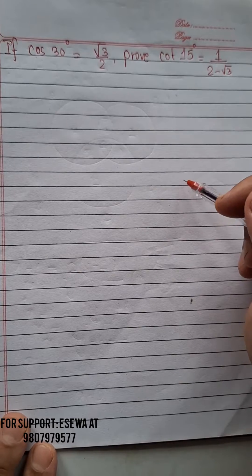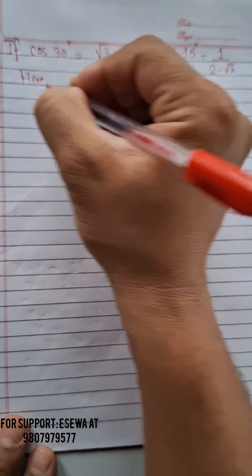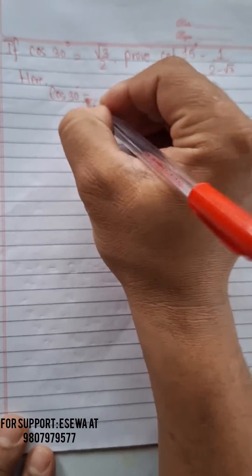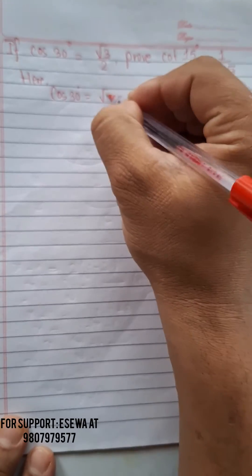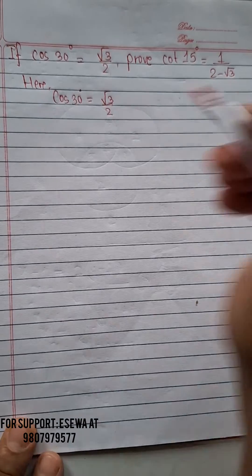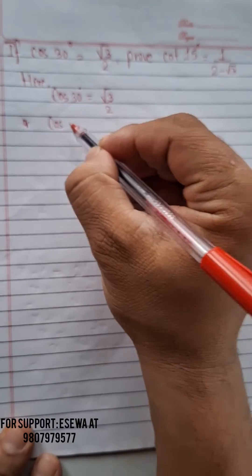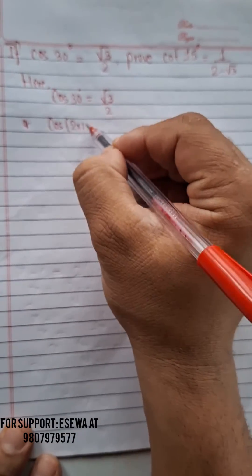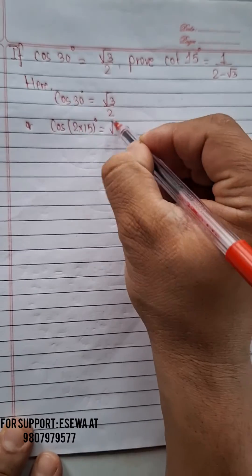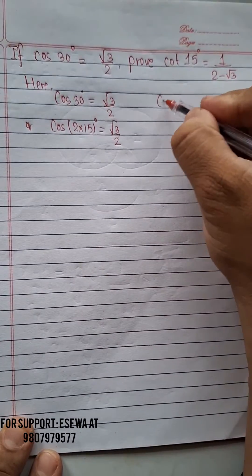We have been given that cos 30° = √3/2. What we can do here is simplify this 30° — we can write it as cos(2 × 15°) = √3/2. Now this can be compared to the cos 2A formula.